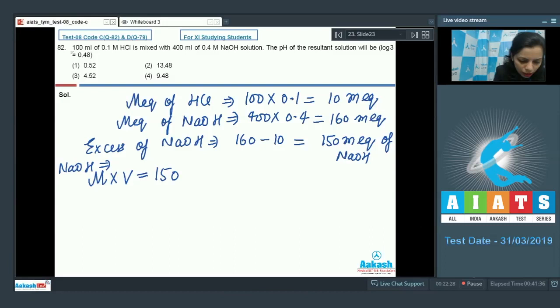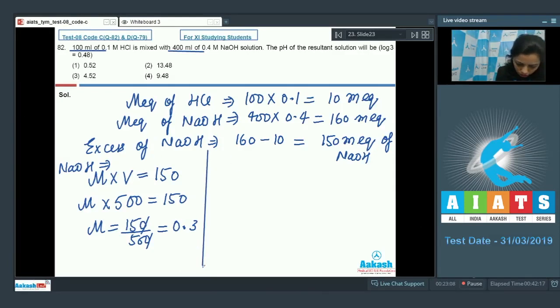Now in this case, the volume becomes 500 ml—100 ml of HCl and 400 ml of NaOH, so the total volume becomes 500 ml. Molarity, and that's equal to 150. So what would be the value of molarity? It is 150 by 500, 15 by 50, or simply it is 0.3 molar. Now this is the molarity of that solution.